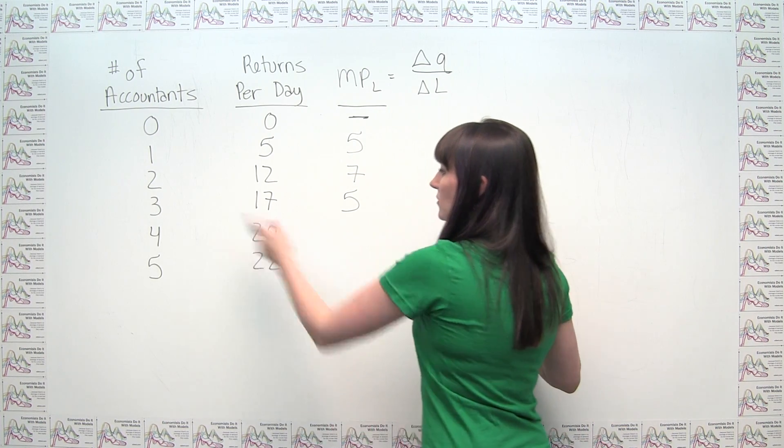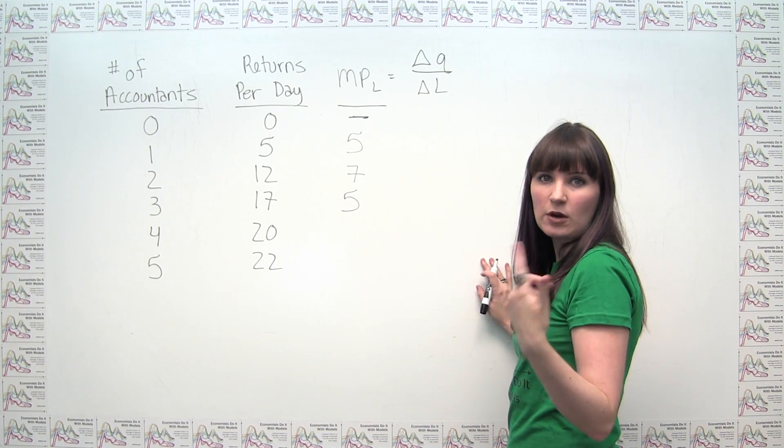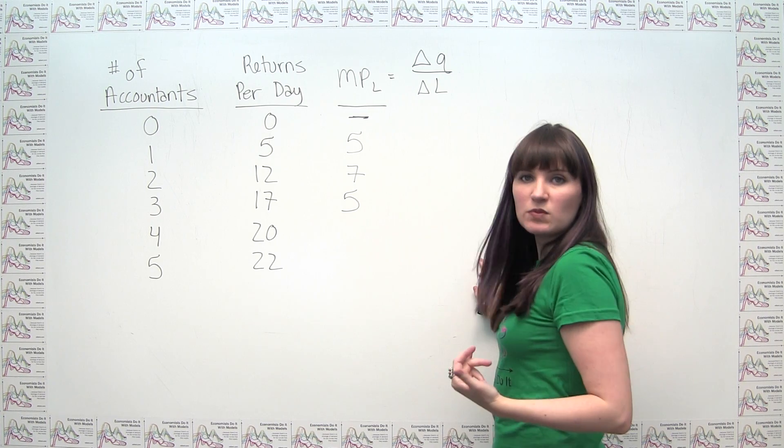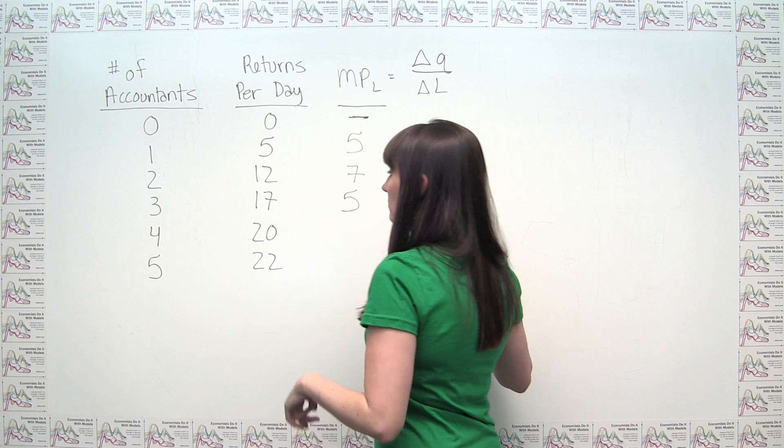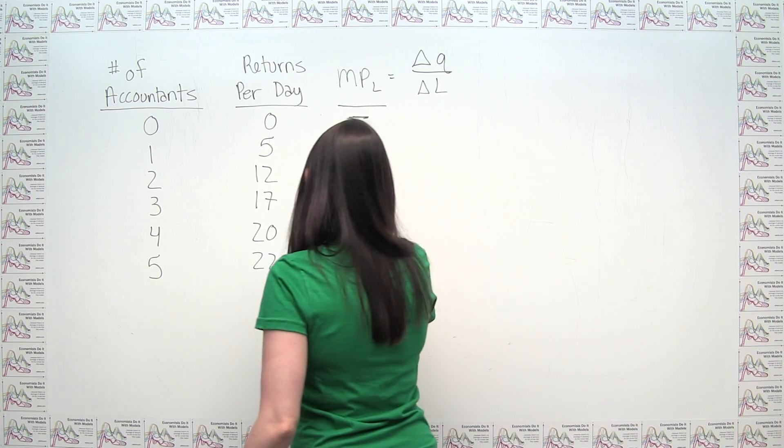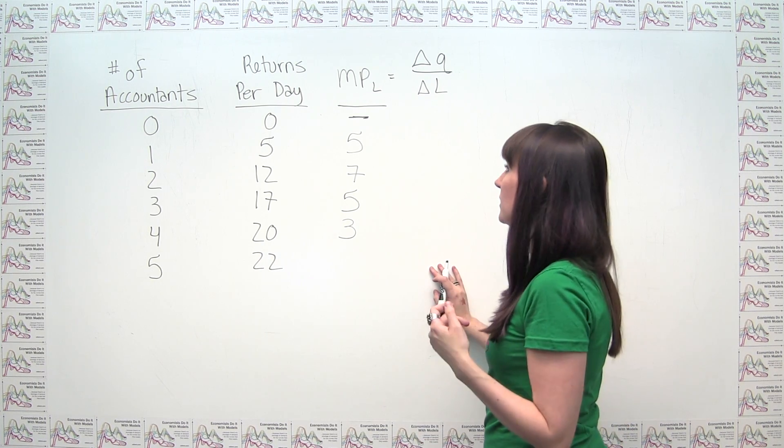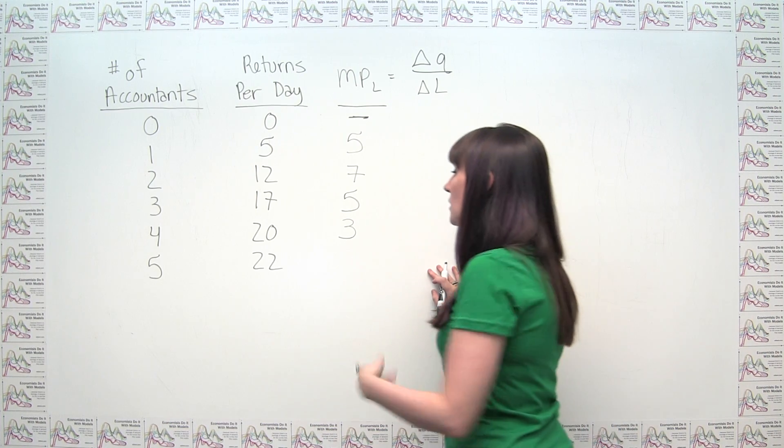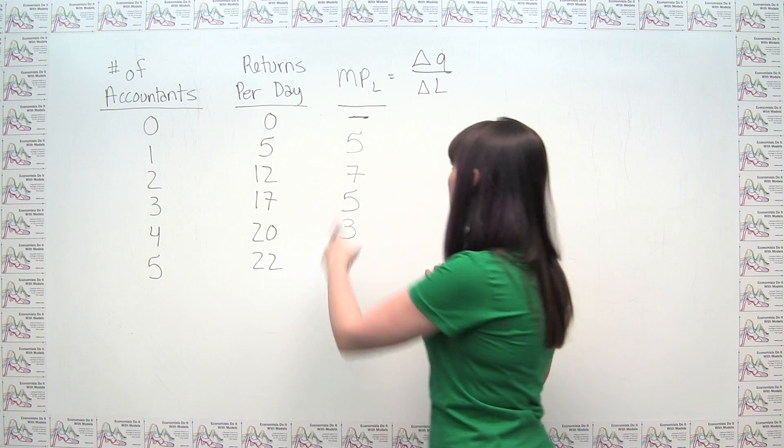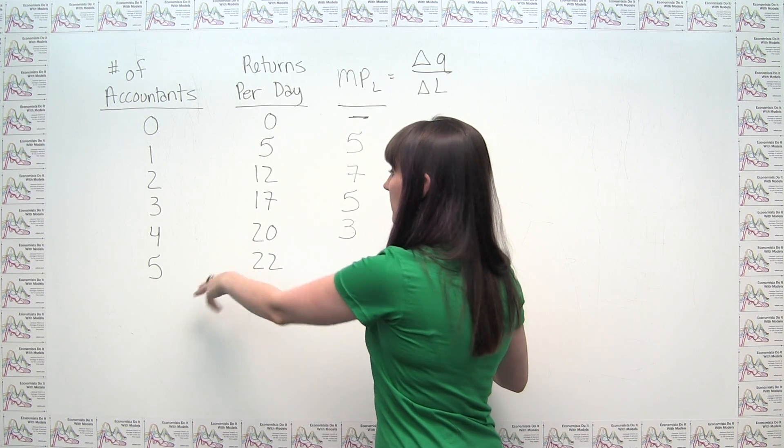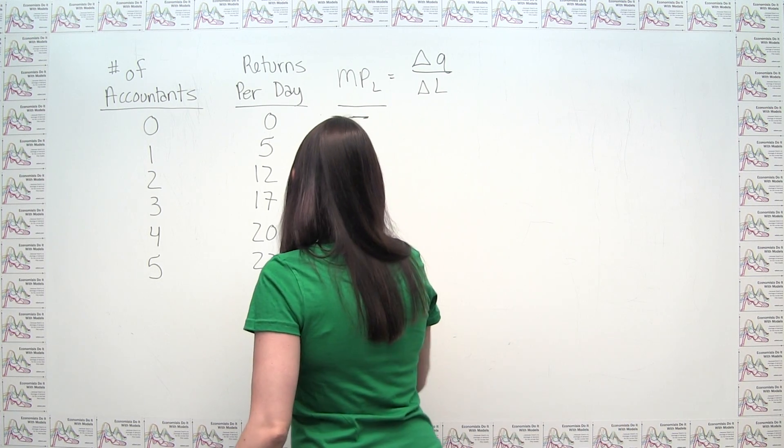The marginal product of this fourth accountant—he brought output from seventeen to twenty, so you probably see how we're going with this. Technically speaking, with this formula, we get twenty minus seventeen divided by four minus three, or just three divided by one, or three. And then this last guy brings us from an output of twenty to an output of twenty-two. So, using this formula, we get twenty-two minus twenty, divided by five minus four, or just two divided by one, or just two.